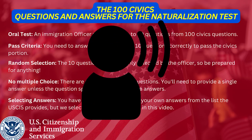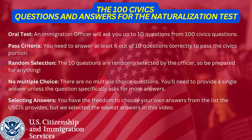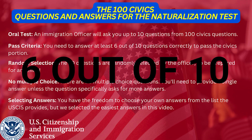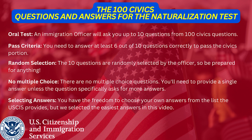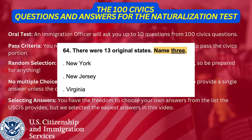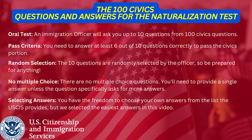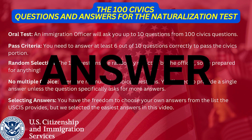For the oral test, an immigration officer will ask you up to 10 questions from the 100 civics questions. You need to answer at least 6 out of 10 questions correctly to pass the civics portion. The 10 questions are randomly selected by the officer, so be prepared for anything. There are no multiple choice questions. You'll need to provide a single answer unless the question specifically asks for more information. You have the freedom to choose your own answers from the list the USCIS provides, but we selected the easiest answers in this video.